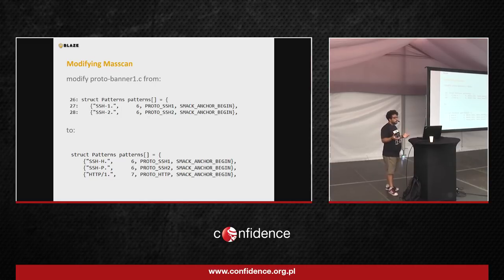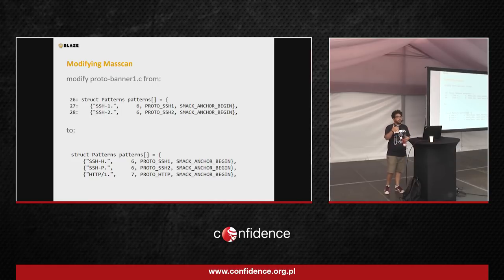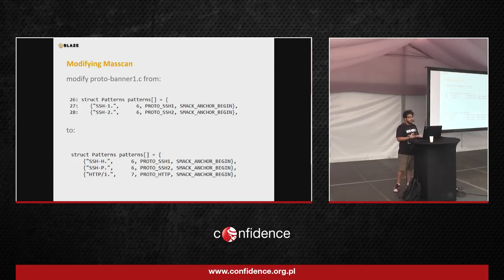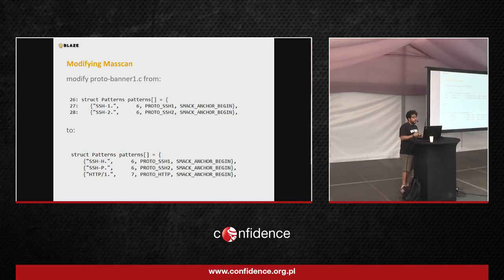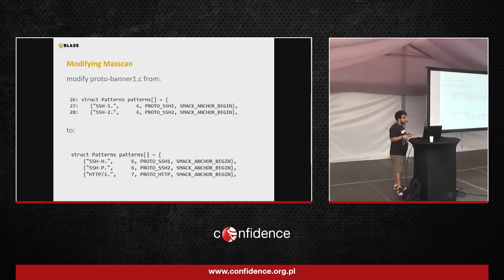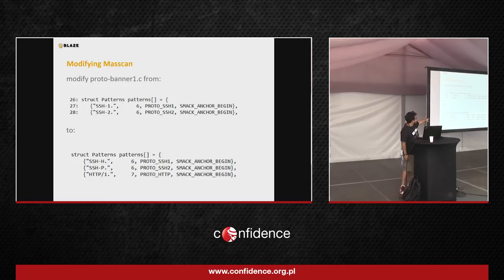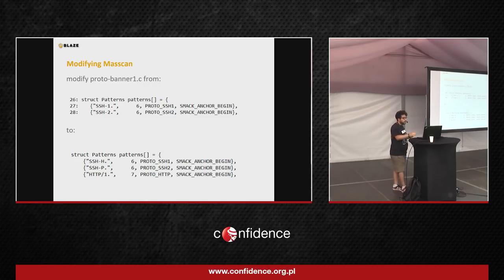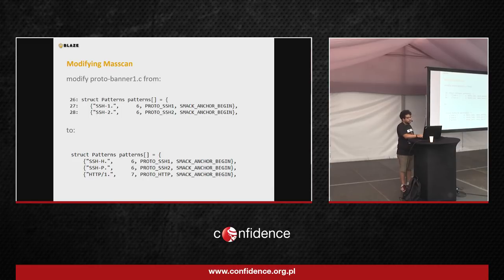In our detection probes, we need not only the banner response but also whatever comes after — like an error message. So we had to modify MadScan. In probably the least elegant way possible, I just corrupted MadScan so that the trigger strings — 'ssh-1.0' and '2.0' — were changed to 'h' and 'p', so they would never match. This means MadScan would capture not just the banner but all additional information that follows. It turns out it works, so that's all I needed.